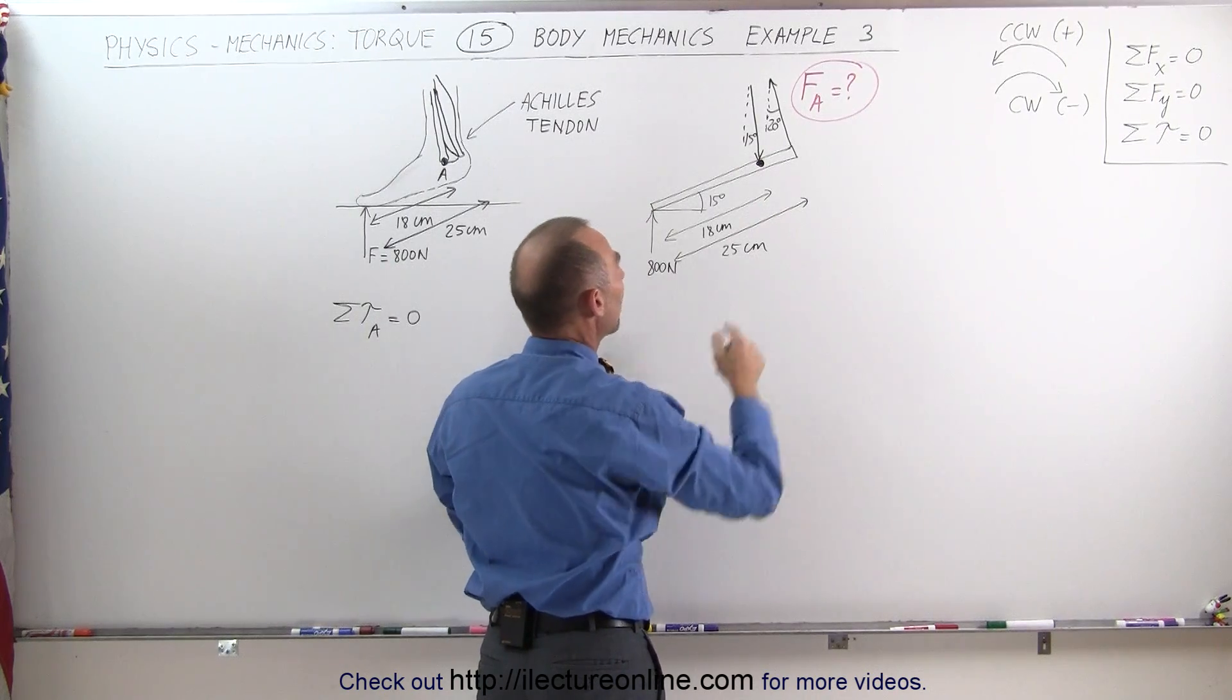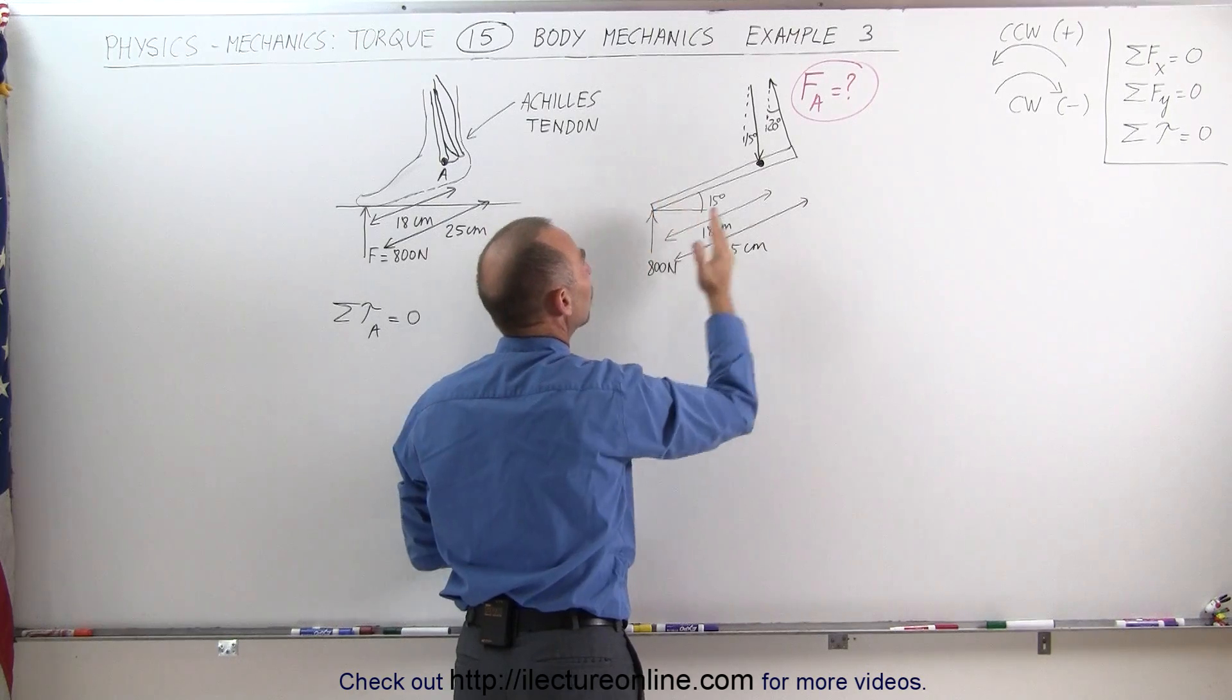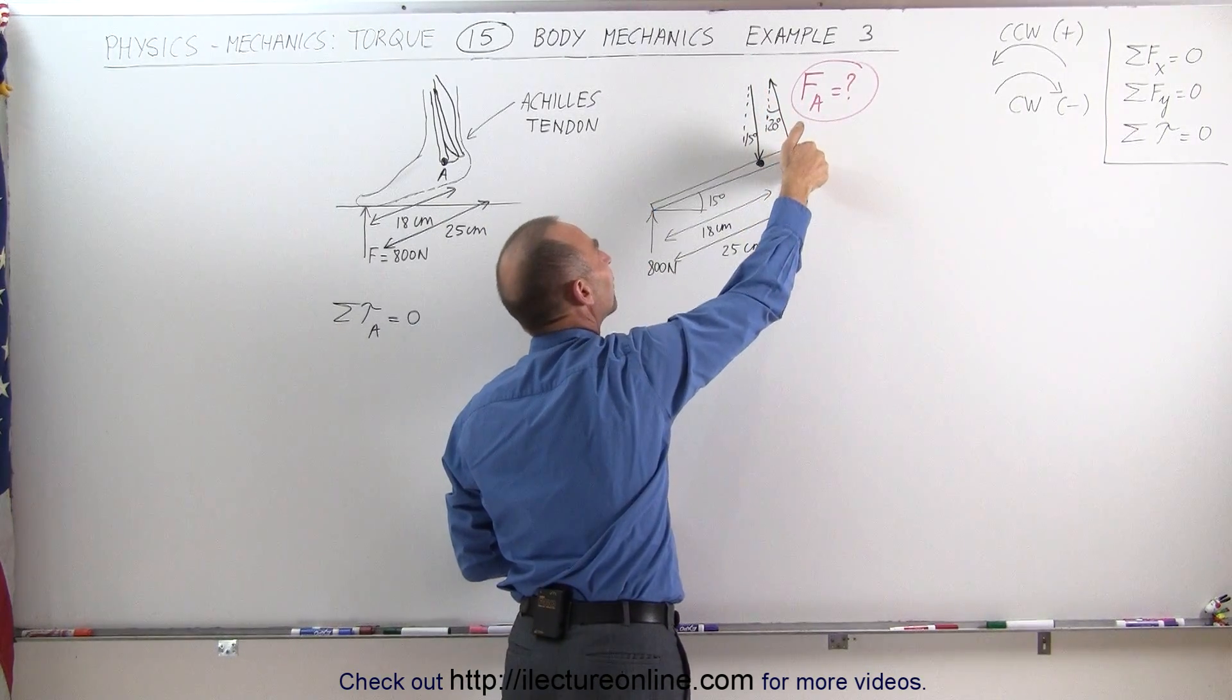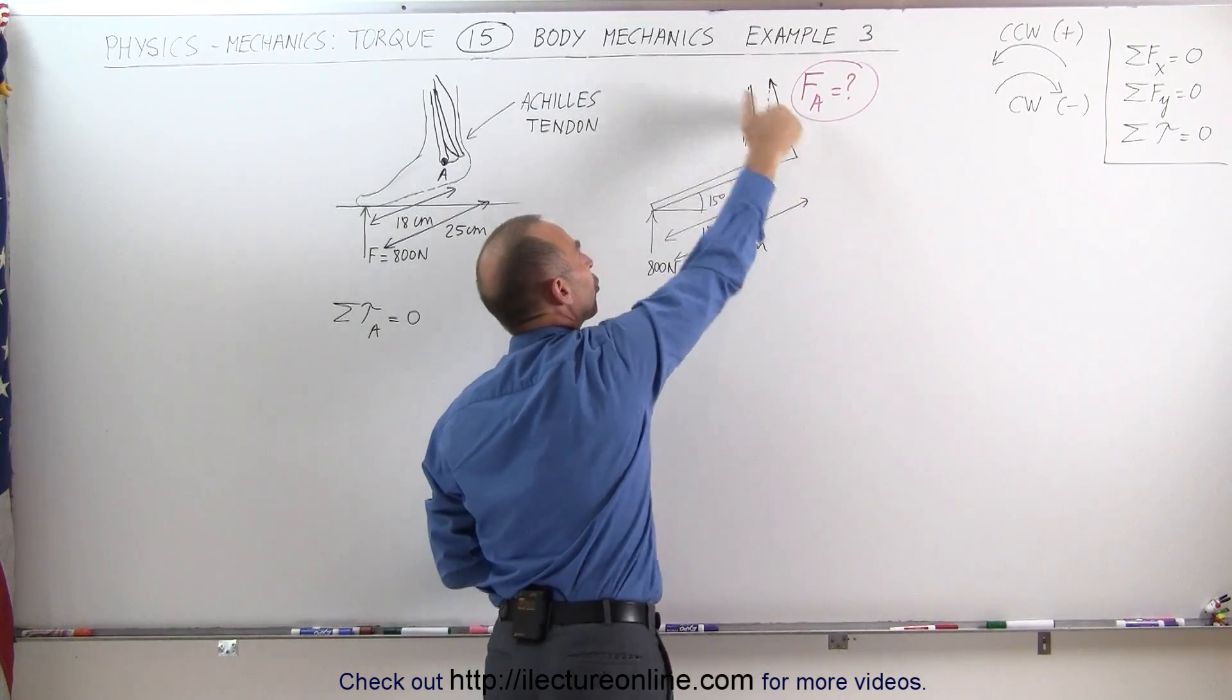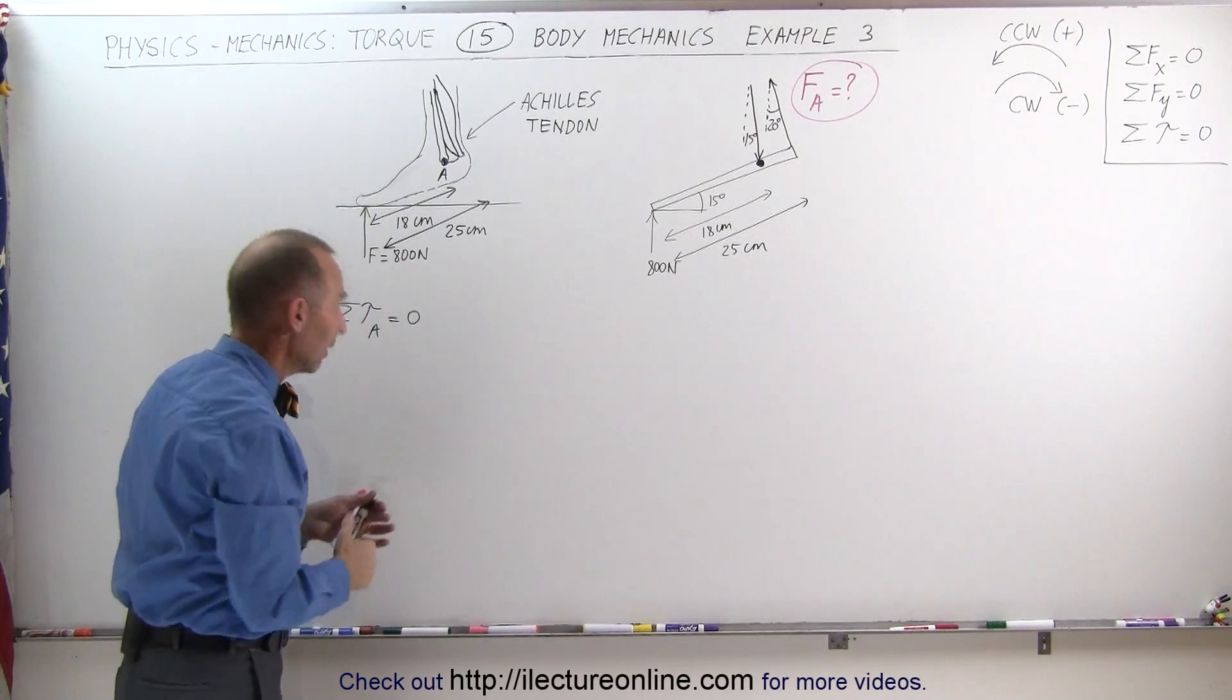We only have two forces now which cause a torque: the ground pushing back against the foot in this direction and the Achilles tendon pulling in this direction. So we have a counterclockwise pull or torque in this direction, we have a clockwise pull in that direction and these should counterbalance one another out.